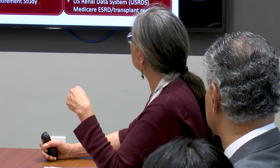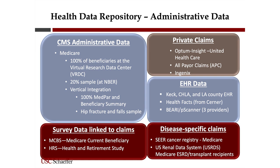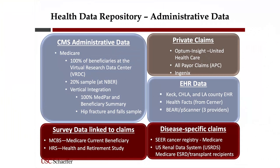We have survey data linked to claims. The MCBS — the Medicare Current Beneficiaries Survey — follows people for three years and provides all of their claims. HRS also has linked claims if people gave permission, and about 80% of entitled people gave permission. We also have disease-specific claims: SEER cancer registry Medicare claims, and Medicare claims from the US Renal Data System (USRDS), which includes ESRD and kidney transplant patients.